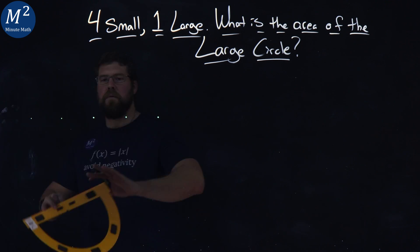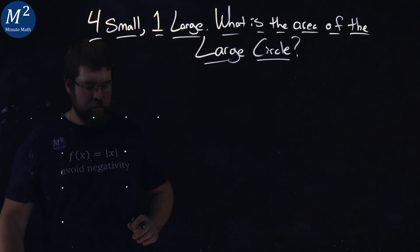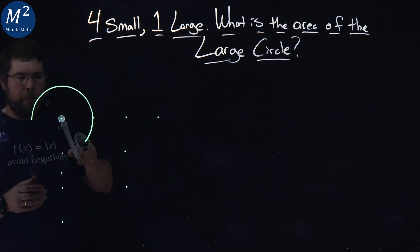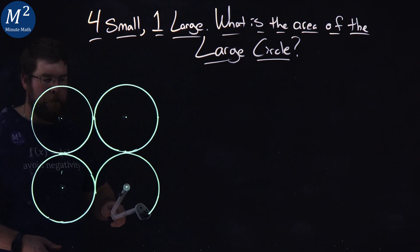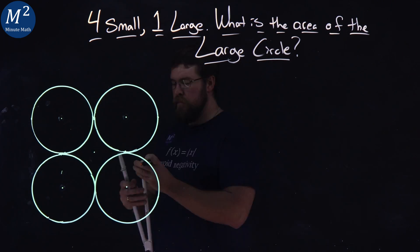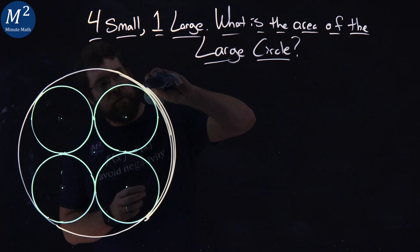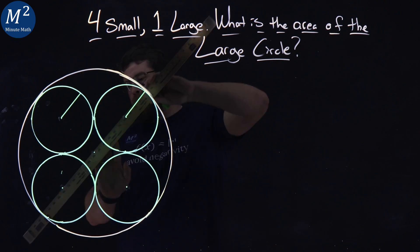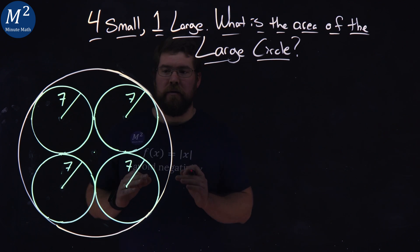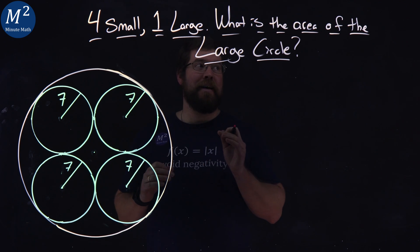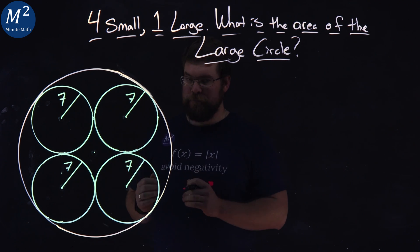We have five circles here. Four are identical — they're the smaller ones. They have a radius of seven and they're inside this large circle. With just this information here, can we find the area of the large circle?